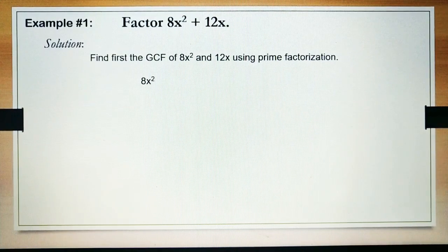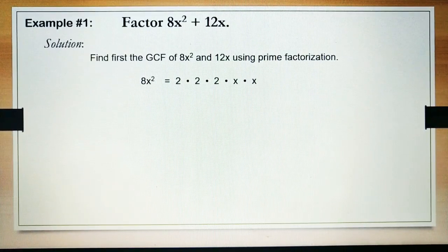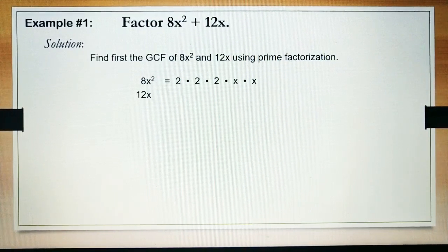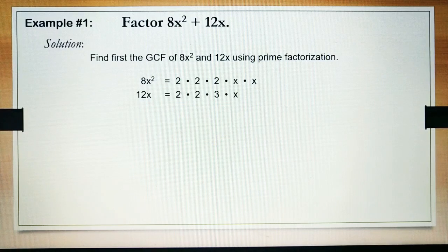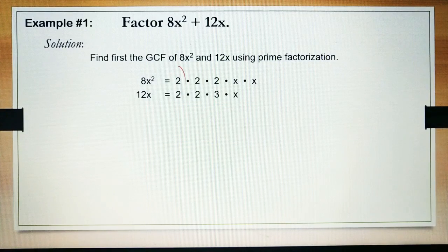8x squared is equal to 2 times 2 times 2 times x times x. As you can see, there are common factors of the two terms. We have 2, 2, and x.